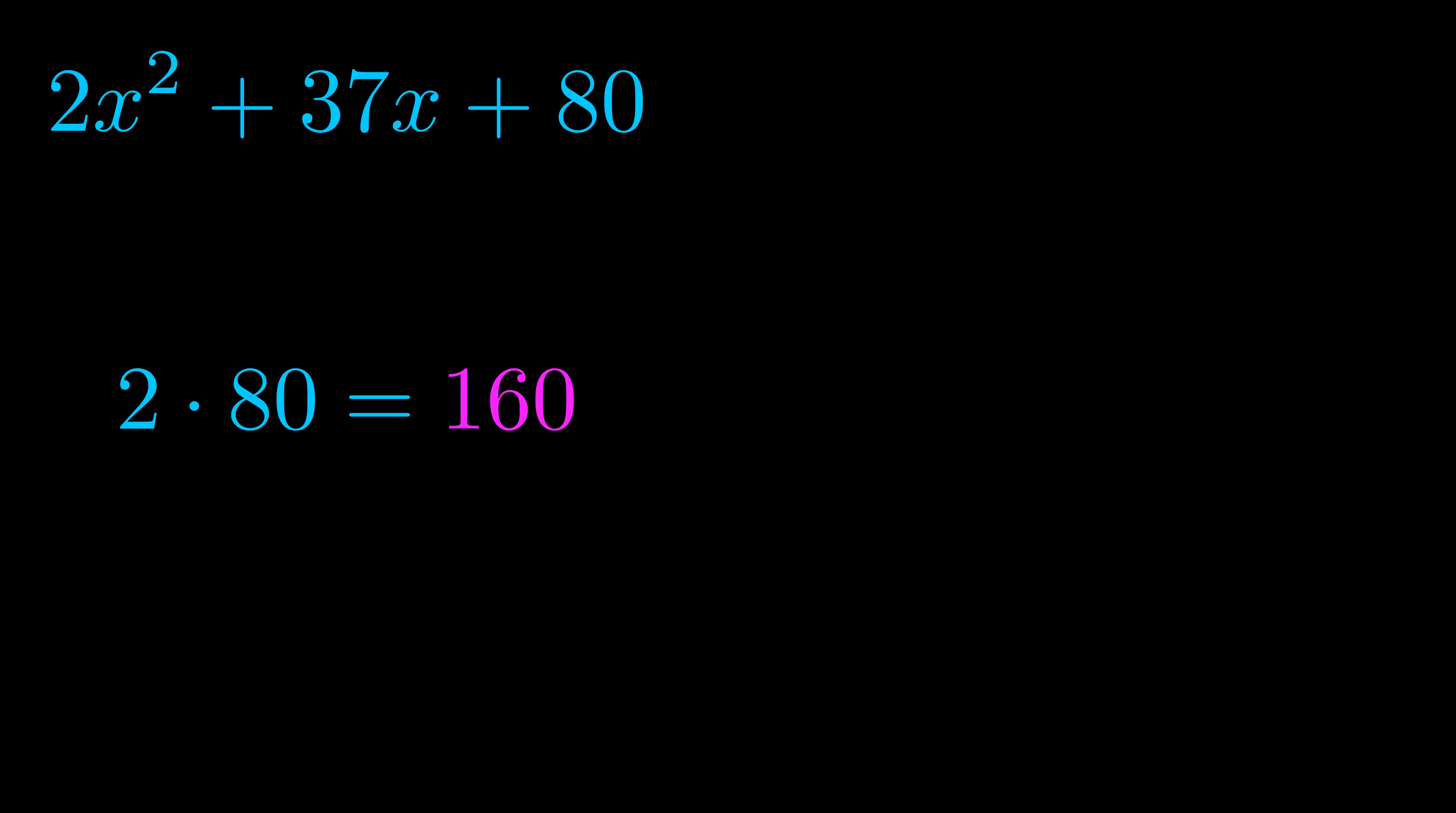Step two is to try to find all of the pairs which multiply to this number. Now turns out you don't really need to find all of them but go ahead and write down as many numbers as you can that multiply to the magenta value for now. Pause the video and resume when you're ready to continue.